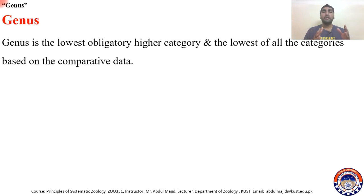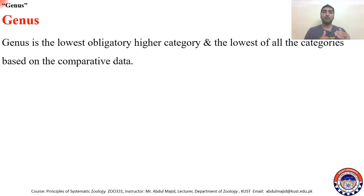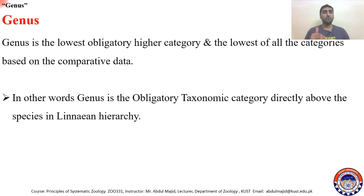The lowest of the higher categories are based on comparative data. We compare data regarding different species and, based on that comparative data, we classify animals into different categories — starting from species, then genus, then family, and so on.